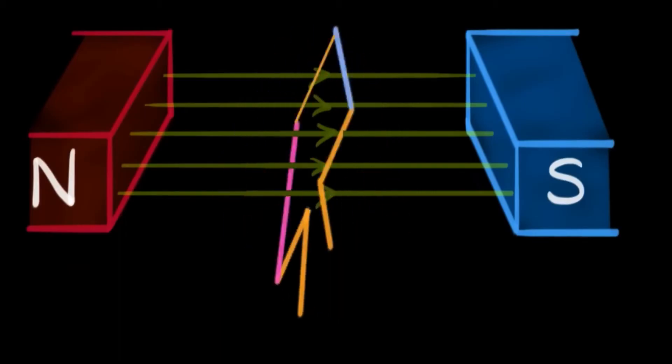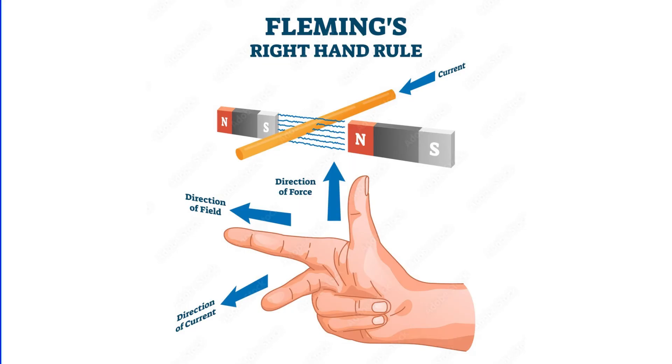This EMF is proportional to the rate of change of the magnetic flux linkage. To determine the direction of this induced EMF, we can use Fleming's right-hand rule, which provides a handy mnemonic for remembering the orientations of force, field and current.